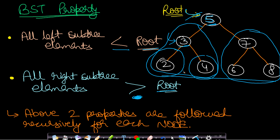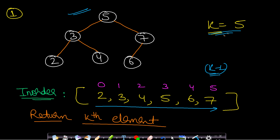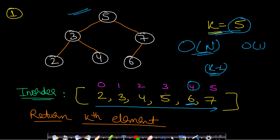Now how do we find the kth smallest element efficiently? I will explain three methods. The first method: find the in-order traversal of the BST. In-order traversal of a BST gives elements in ascending order. You can then simply return the k-1 index element as the kth smallest. If k equals 5, return the fourth index element, which is 6. The time complexity is O(n) for forming the array, and space complexity is also O(n) for the extra array.